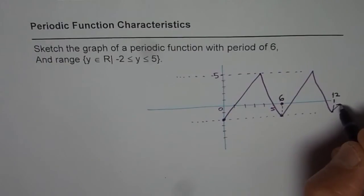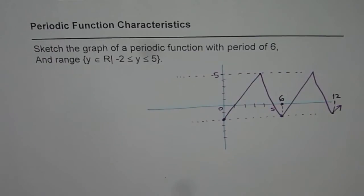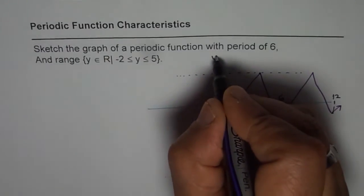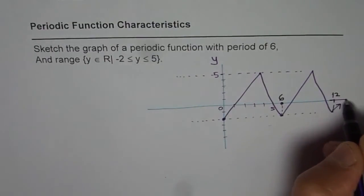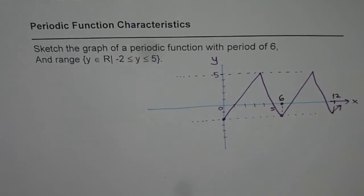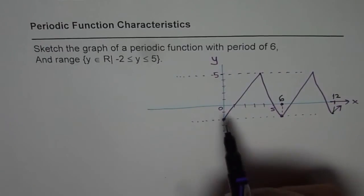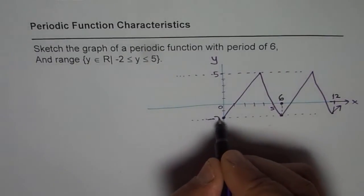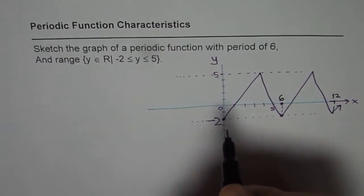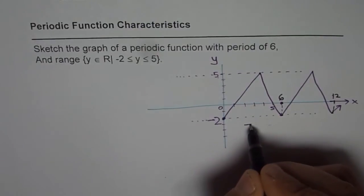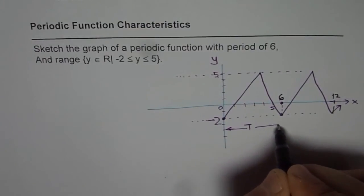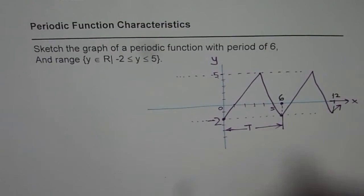And again we can go up from here. So this arrow indicates that you can go and repeat this particular wave. I hope with this you understand how to draw a periodic function with the given conditions. So it satisfies our condition which is that the range is from -2 to 5 and the period T is of 6 units. Do you see that? So after every 6 units it repeats.